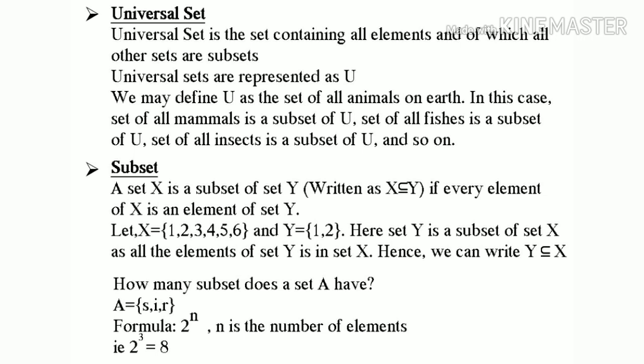Next one is subset. A set X is a subset of set Y, written as X ⊆ Y, if every element of X is an element of set Y. Let X equal to {1, 2, 3, 4, 5, 6} and Y equal to {1, 2}. Here Y is a subset of X, as all the elements of set Y are in set X. Hence, we can write Y ⊆ X.